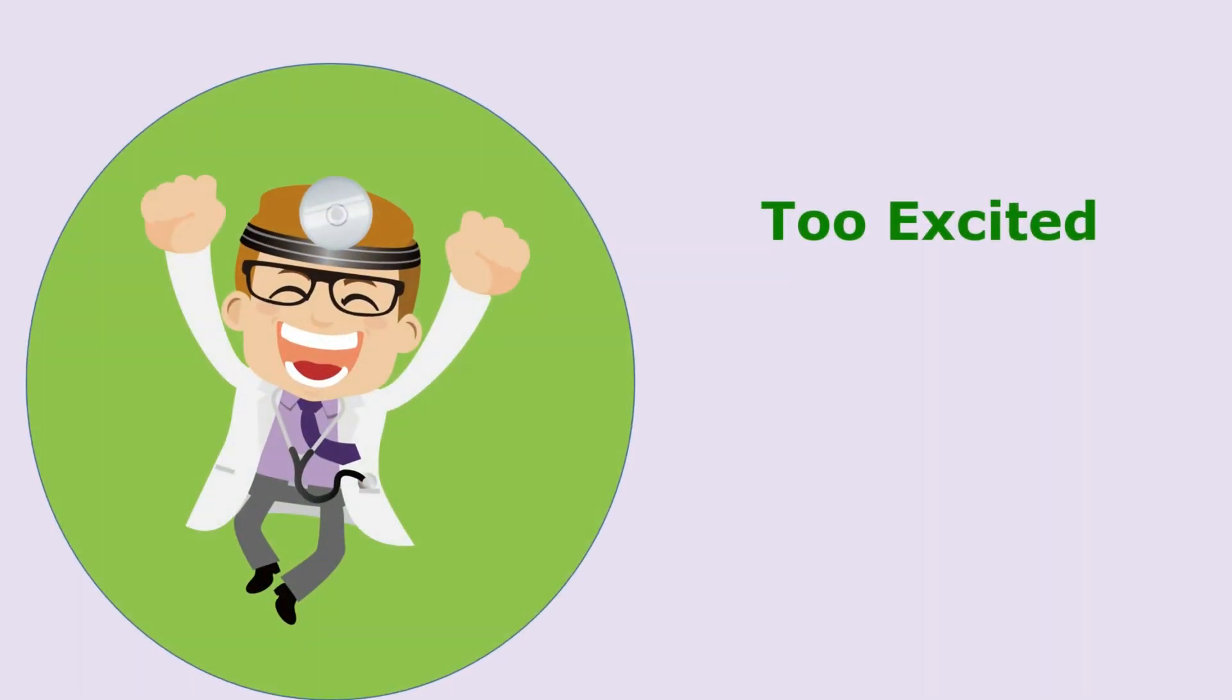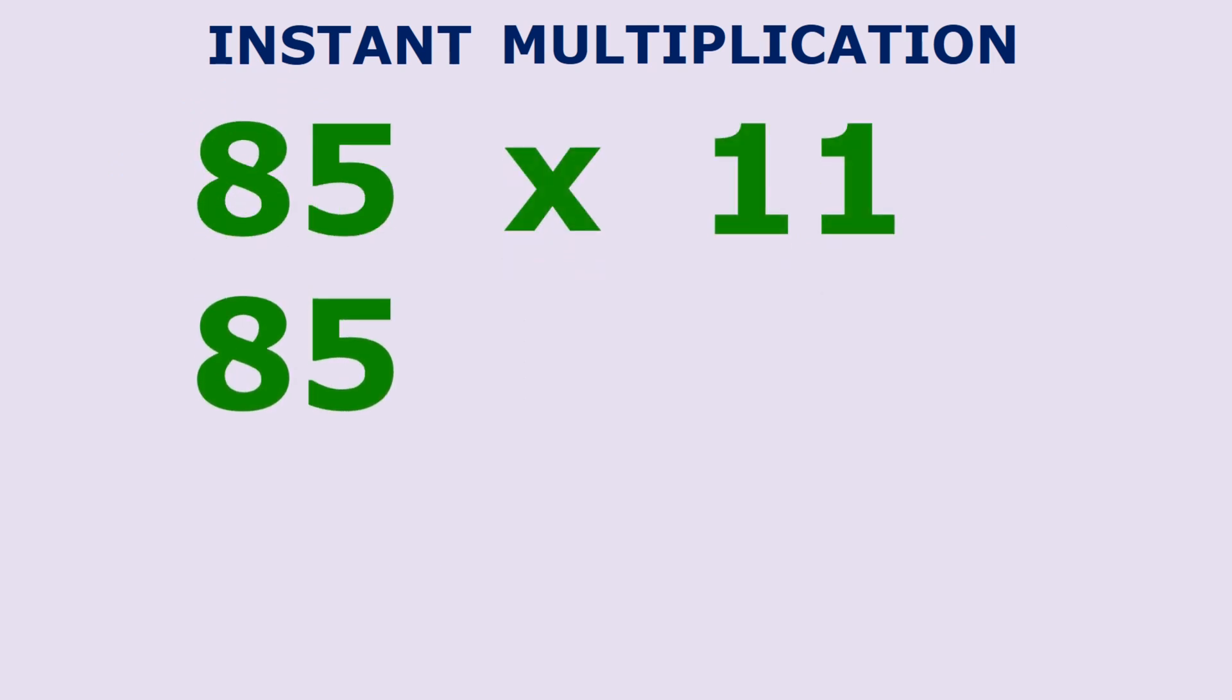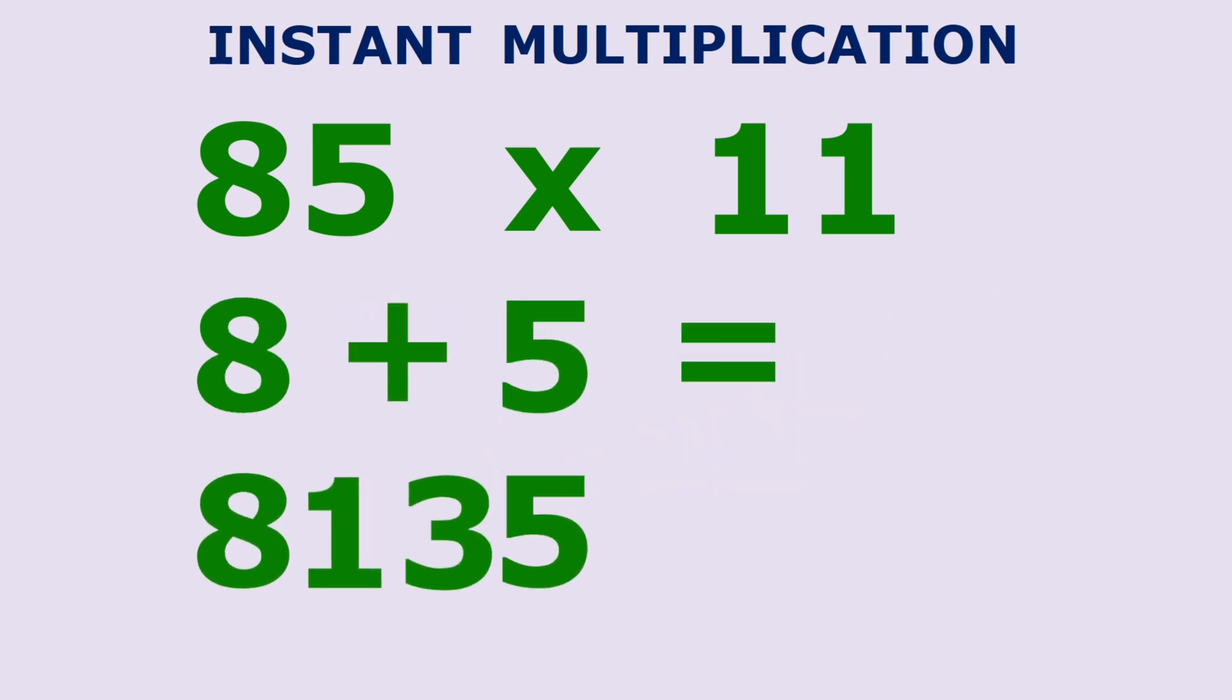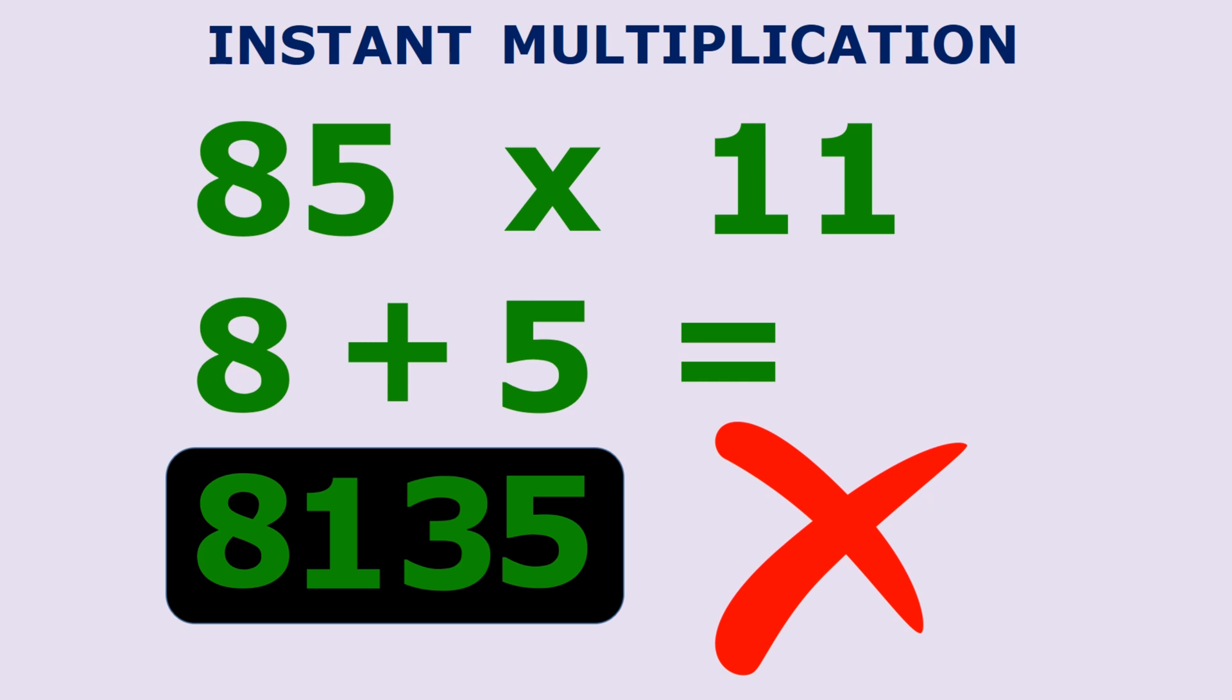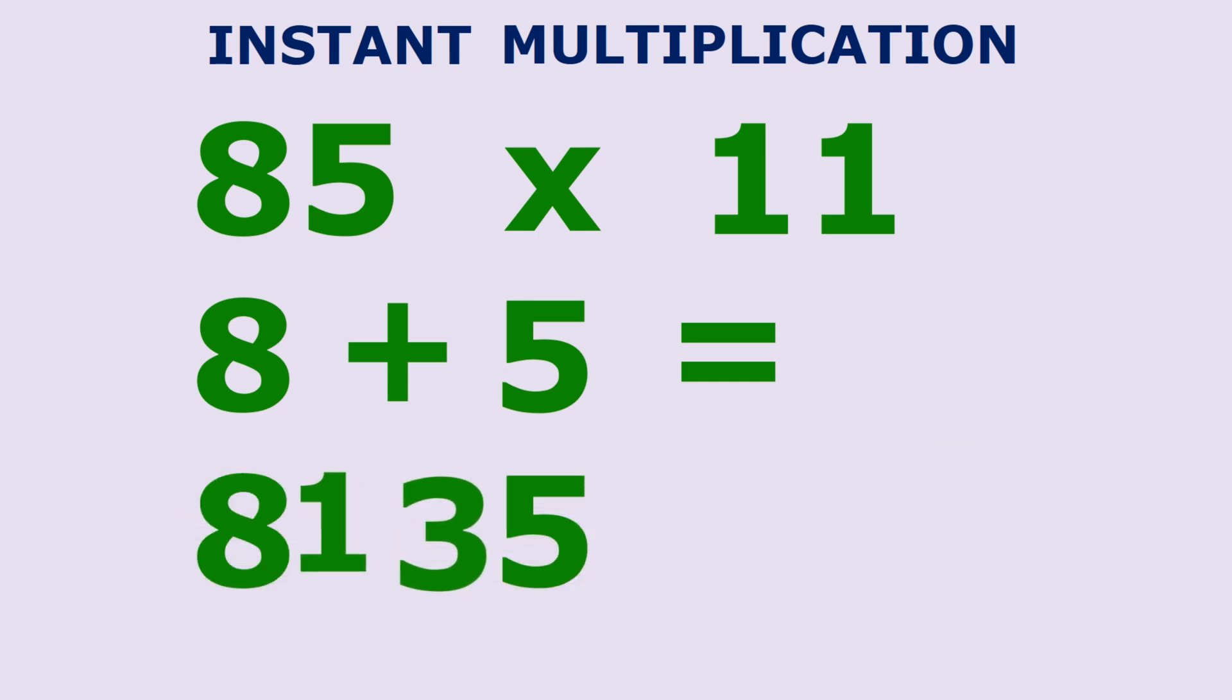Now, before you get too excited, I have shown you only half of what you need to know. Suppose the problem is 85 x 11. Although 8 plus 5 is equal to 13, the answer is not 8135. As before, the 3 goes in between the numbers, but the 1 needs to be added to the 8 to get the correct answer, which is 935.